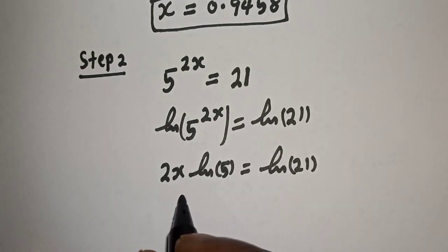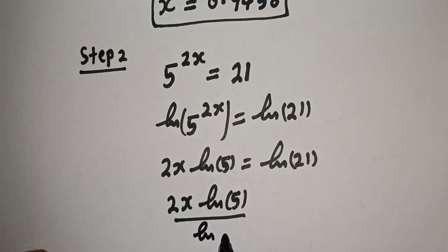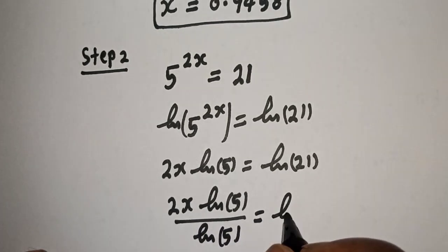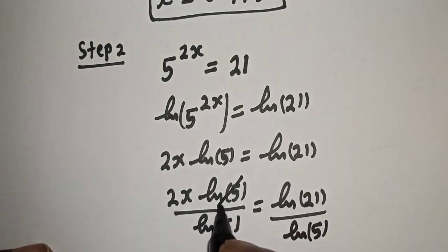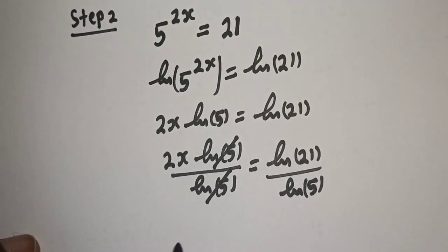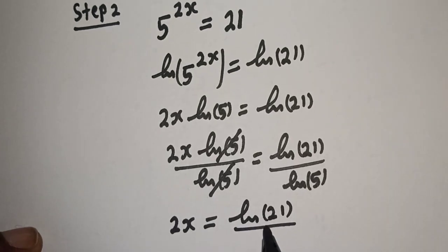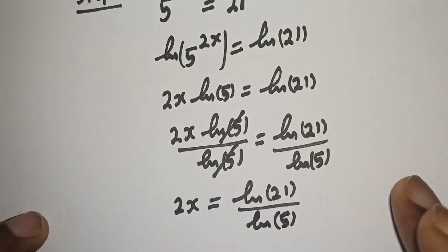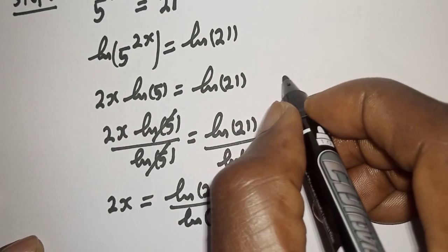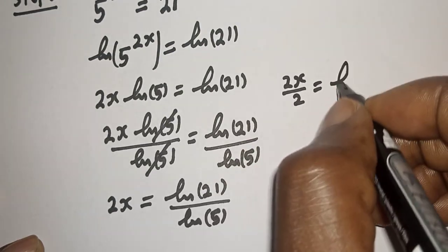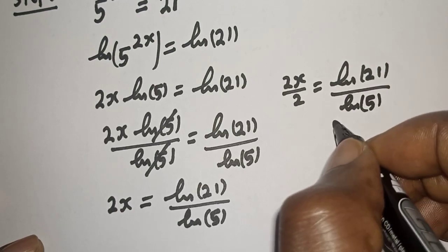Let's divide both sides of the equation by natural log of 5. So, 2x times natural log of 5 divided by natural log of 5 is equal to natural log of 21 divided by natural log of 5. This gives 2x is equal to natural log of 21 divided by natural log of 5. Then divide both sides by 2, giving x equals natural log of 21 divided by natural log of 5, all over 2.